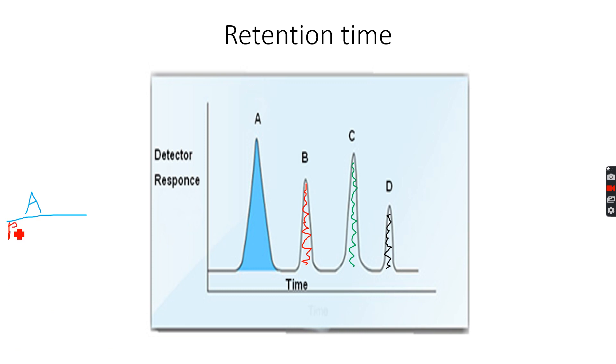It will be area A over area B plus area C plus area D. So the area of A over the sum of all the areas multiplied by 100, and this will give the percentage composition of A.